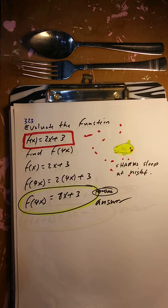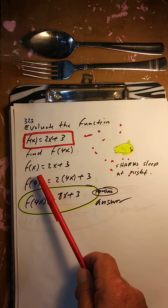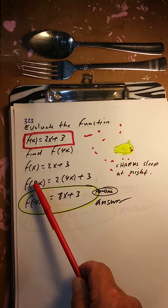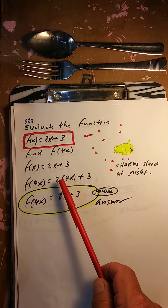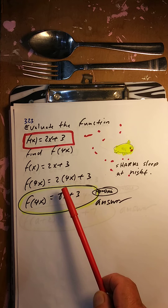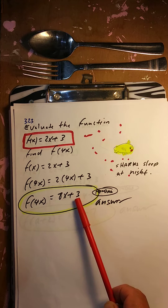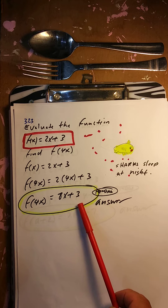Evaluate the function, find f of 4x. Put a 4x in for the x, replace x by 4x. So 2 times 4x is 8x plus 3. So f of 4x is 8x plus 3.